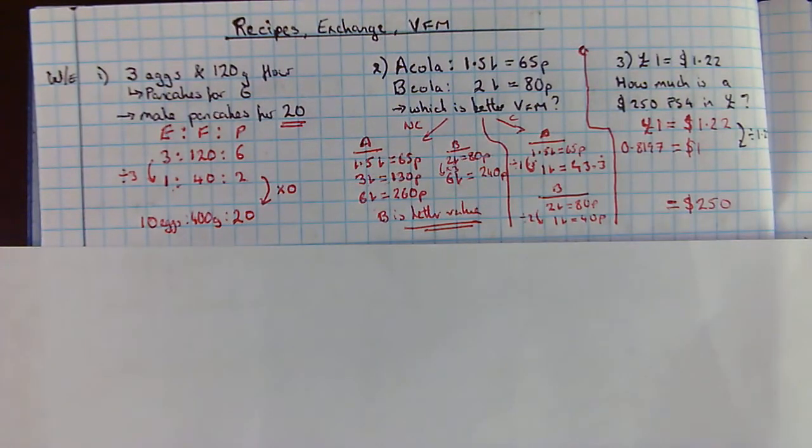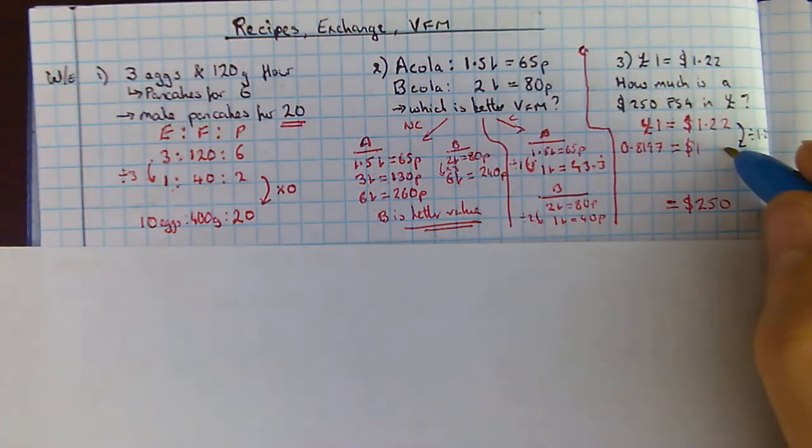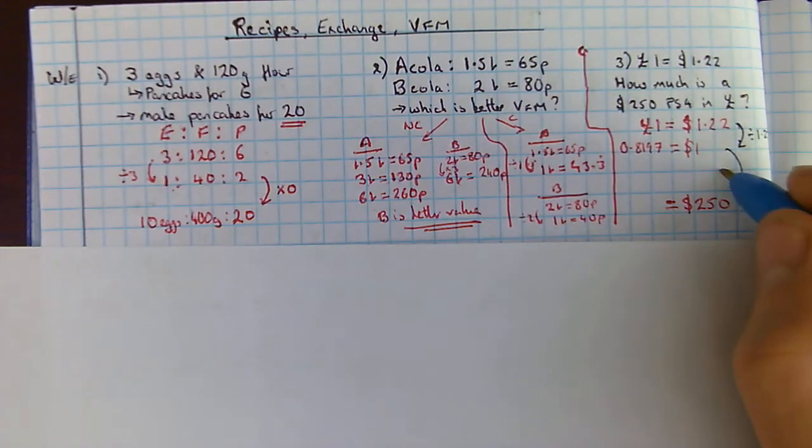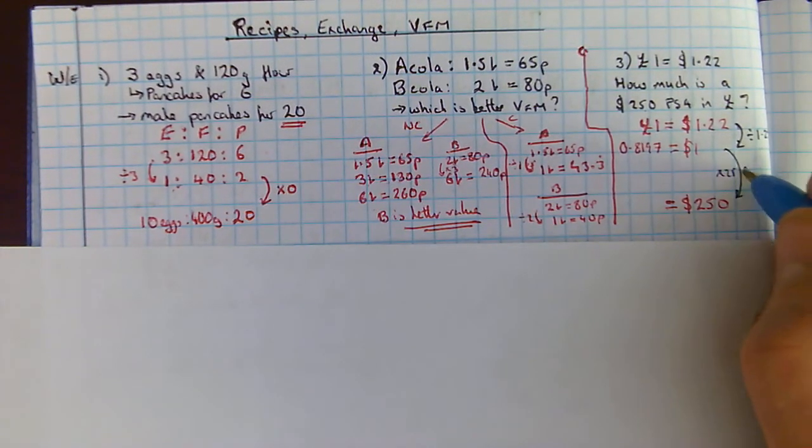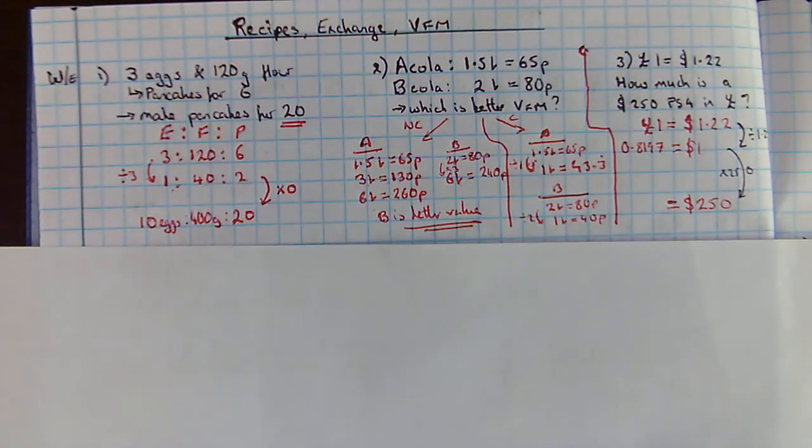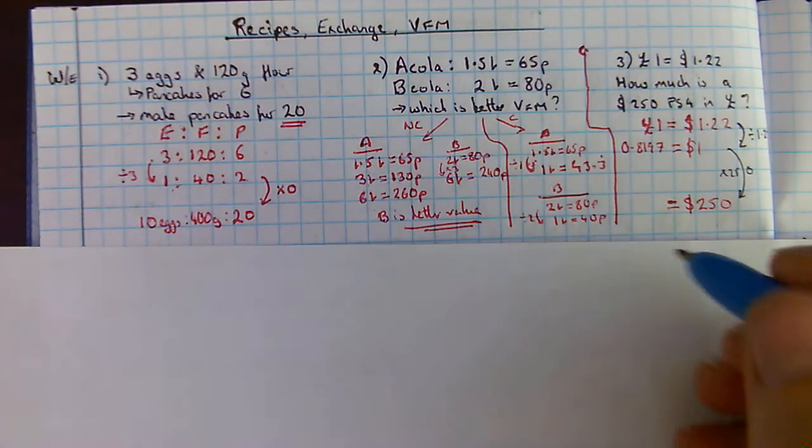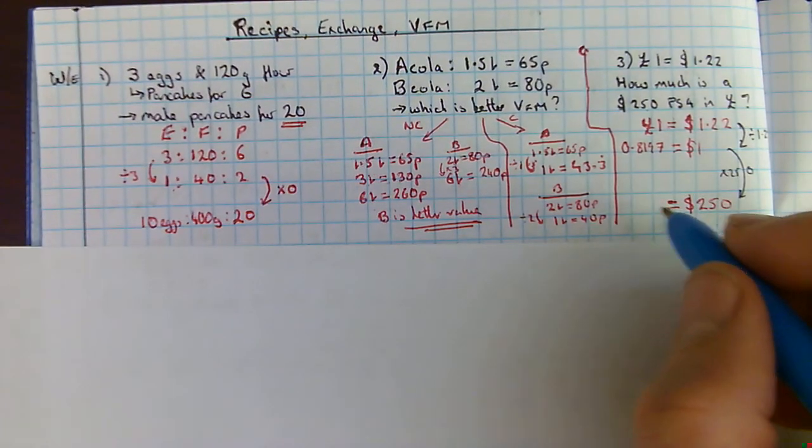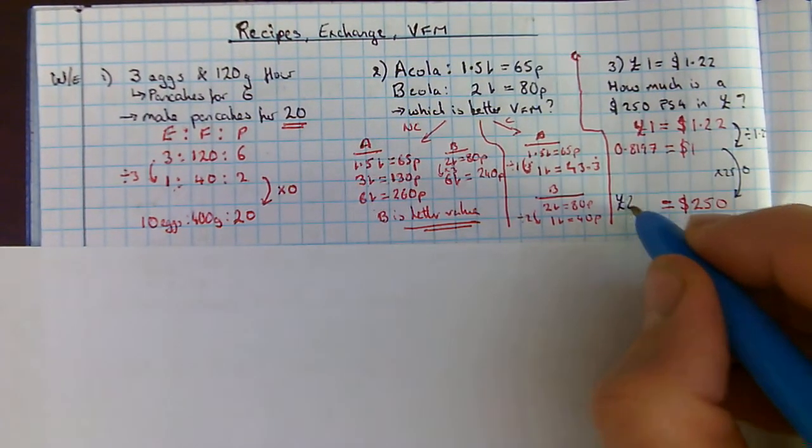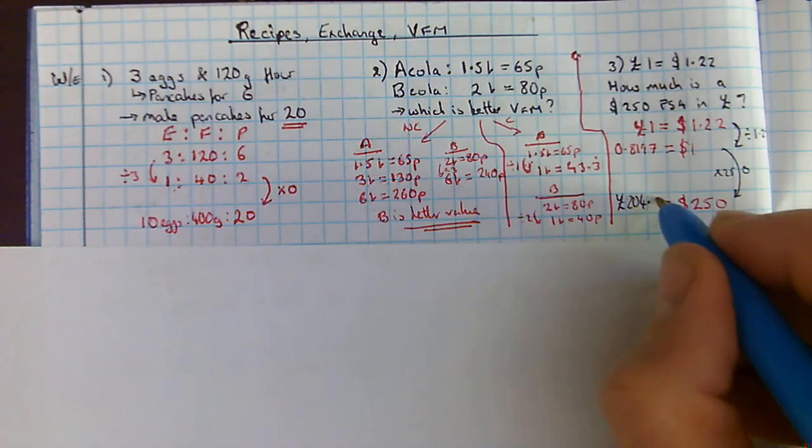Now, I can use that to go up to my 250 times by 250 on the left-hand side. 0.8197 times 250 gives me, to the nearest penny, £204.92.